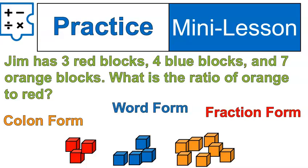Hey, welcome back. We've got our colon form, word form, and fraction form. There are seven orange blocks and three red blocks. So it would be a ratio of seven to three.